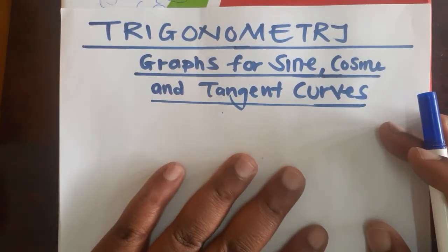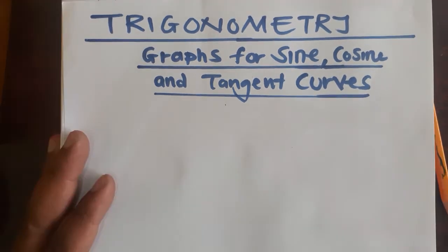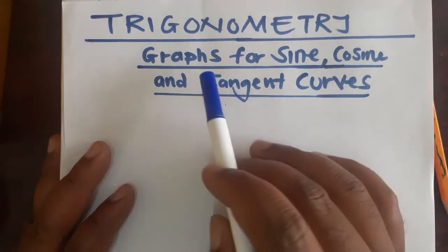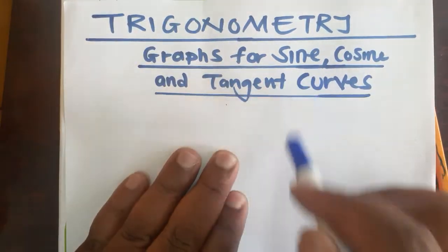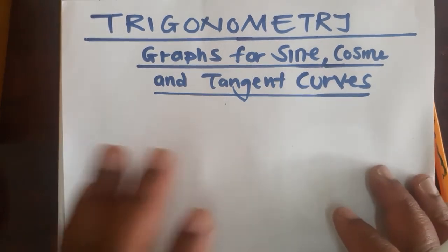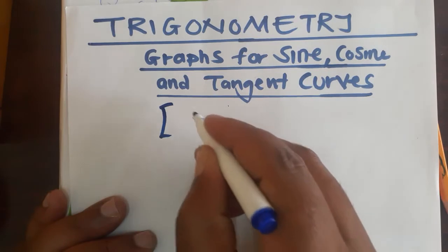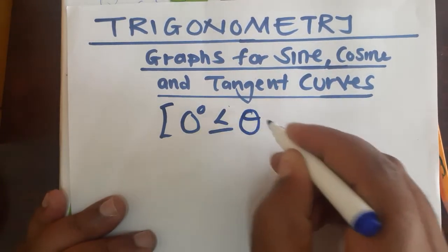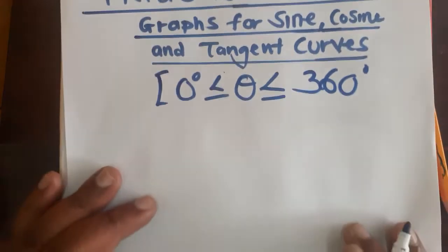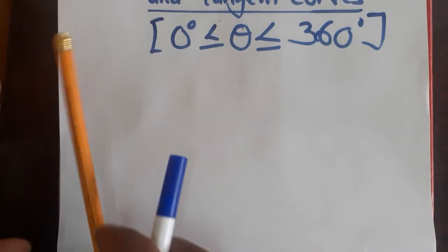Hello friends, welcome to our channel where we are presenting lessons in mathematics. In this lesson we are trying to deal with the graphs of the three trig ratios — sine, cosine, and tangent. We are going to draw these graphs for the range zero degrees less than or equal to theta, less than or equal to 360 degrees.